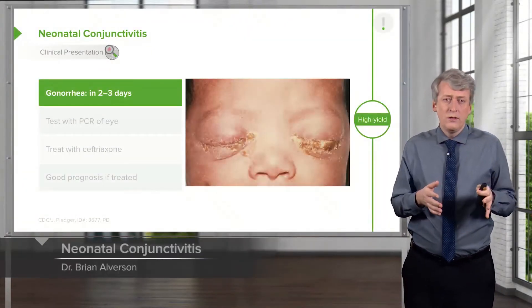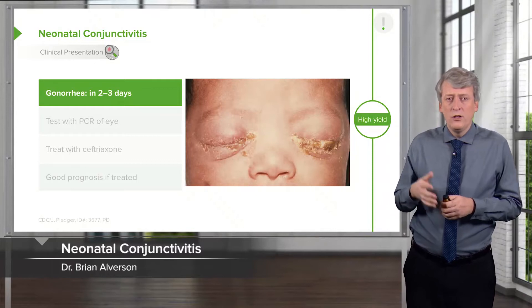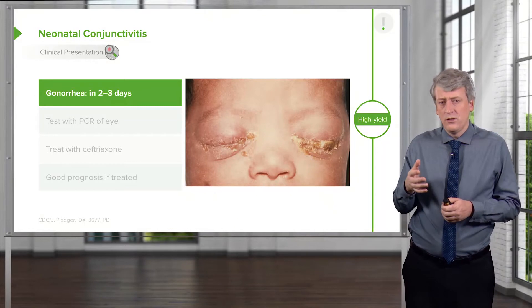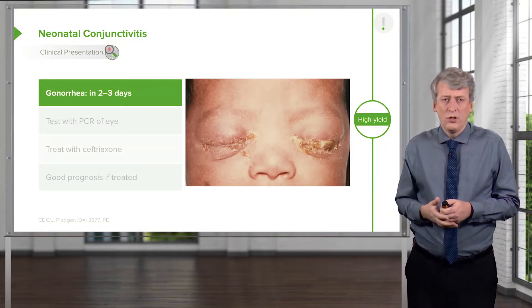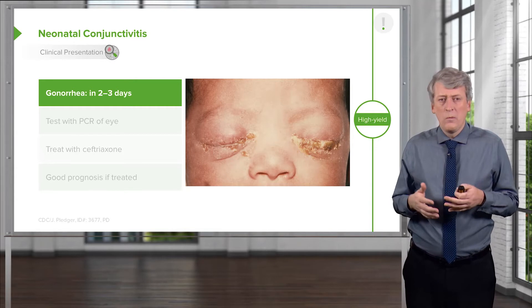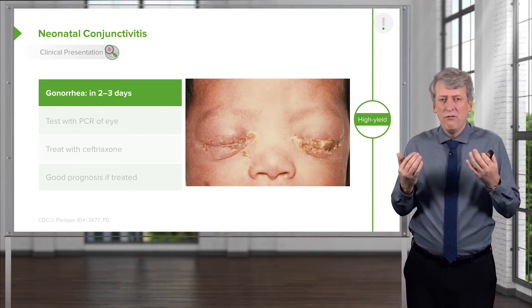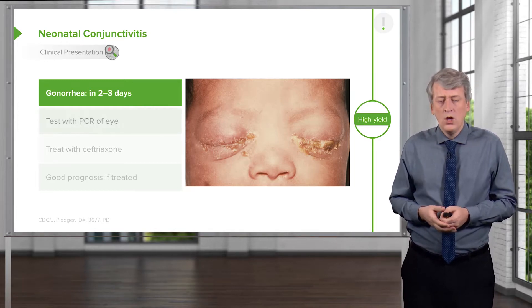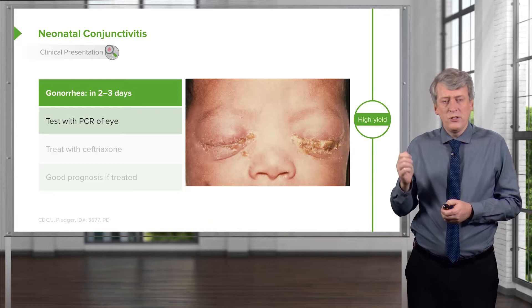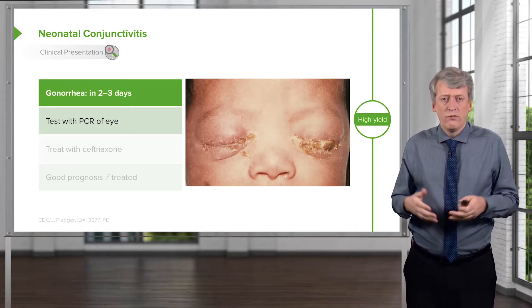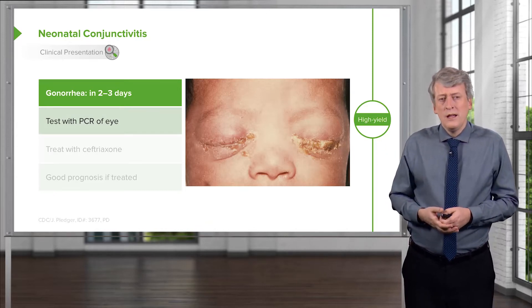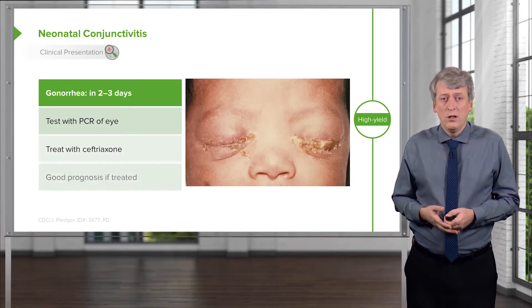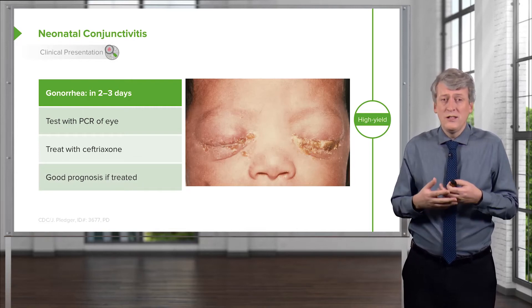There are a few exceptions in infants. Gonorrhea of the eye is common in infants born to mothers with active gonorrhea. It generally shows up in two to three days and will be a very vigorous and aggressive bacterial conjunctivitis. We can test it with a PCR of the eye, which looks for genetic material of the gonococcus. This we need to treat with ceftriaxone — we need to admit these infants to the hospital — and if treated, the prognosis is outstanding.